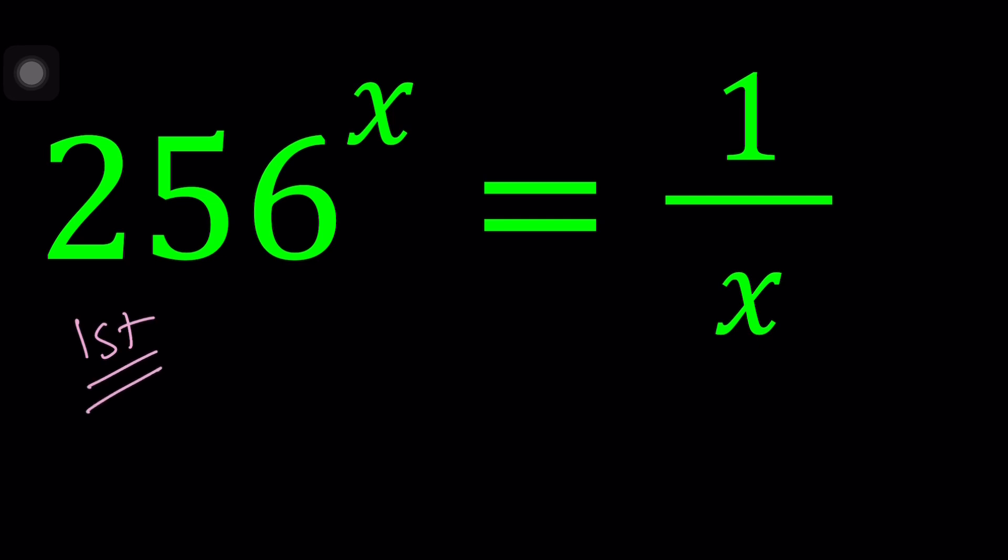For my first method, I'm going to go ahead and cross multiply. So this is going to turn into x times 256 to the power x equals 1.